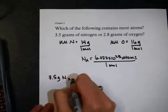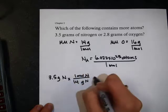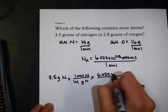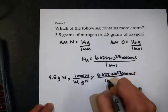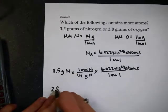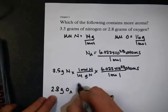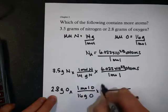Starting from 3.5 grams of nitrogen, I'm going to use my molar mass. I'm dividing by the molar mass so that the grams will cancel. That will get me to moles, so I need to multiply by Avogadro's number to get the moles to cancel, and that will get me to atoms. Before I put it in my calculator, I'll just set up the other one exactly the same way. The only thing that changes is my starting amount and my molar mass.